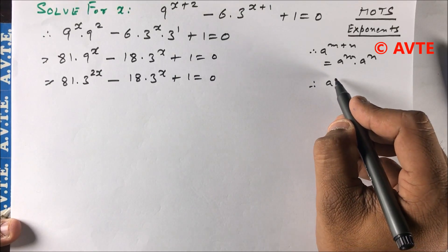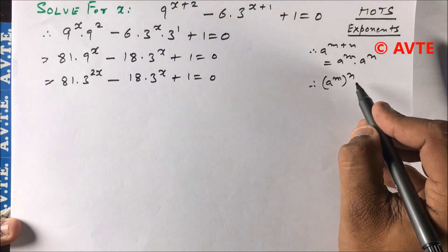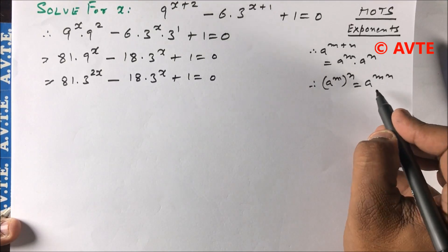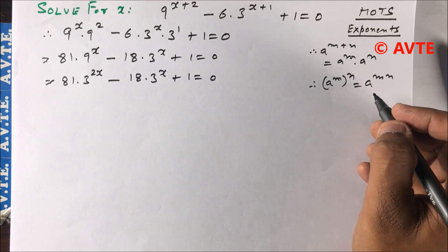We can write this as 81·3^(2x) - 18·3^x + 1 = 0. Here we apply the law (a^m)^n = a^(mn), so we break it like this.